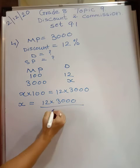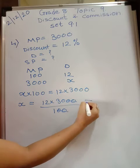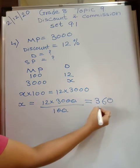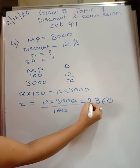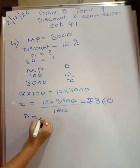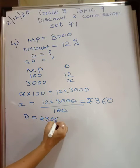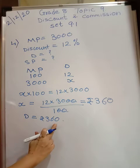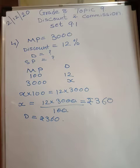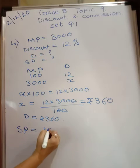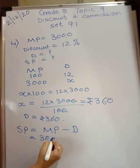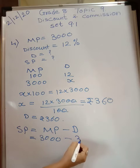So x equals 12 into 3000 upon 100. Cancel the zeros — 12 threes are 36, and one more zero — so discount is rupees 360. Now you have to find the selling price. Selling price equals marked price minus discount, which is 3000 minus 360.